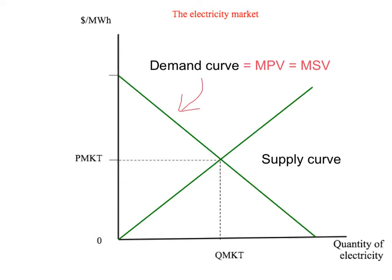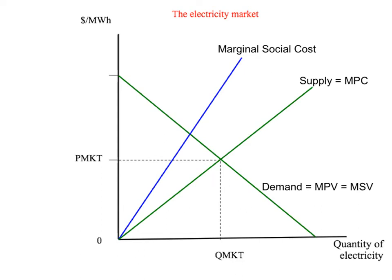We also have our supply curve for electricity — that's the upward sloping green line. As usual, our supply curve will be our marginal private cost curve — the marginal cost of the private producers of electricity. But because we have an externality in the supply of electricity, our supply curve will not be the marginal social cost curve. The marginal social cost will differ from the marginal private cost because of the externality. So our blue upward sloping line, which lies above the supply curve, includes our externality — it's our marginal social cost curve.